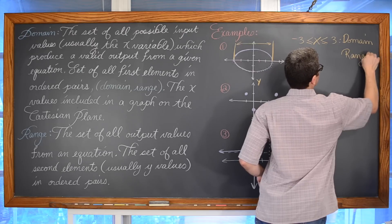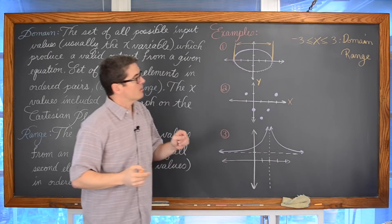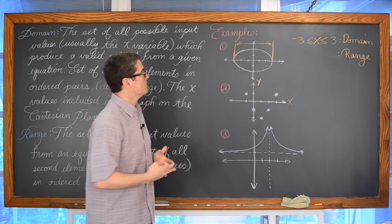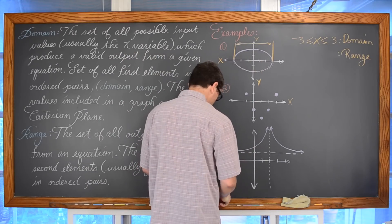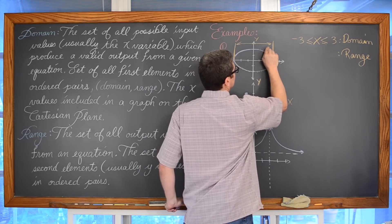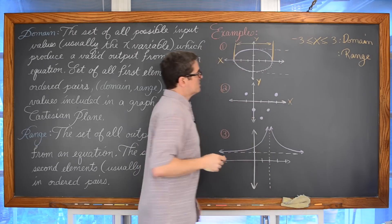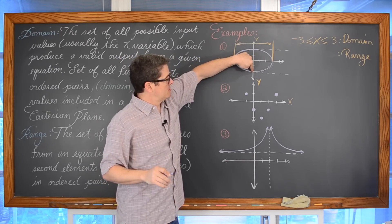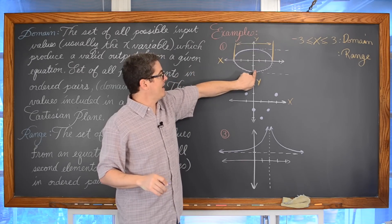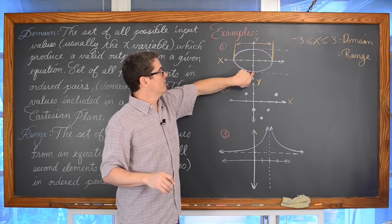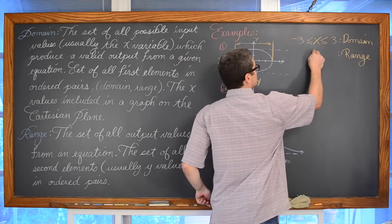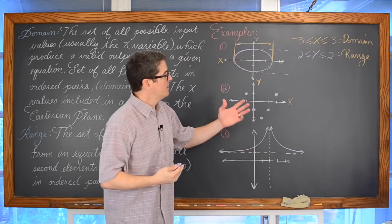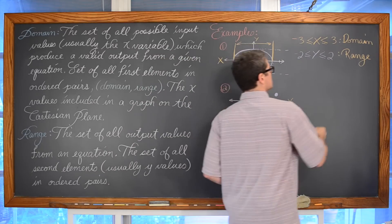The range would be all of the output values — graphically, we are looking at the y-axis. The range is all of the y values included in that graph. The graph is continuous, so it seems like it goes as far down as negative two and as far up as positive two, and every single y value is included between negative two and positive two. So the range is y is greater than or equal to negative two and less than or equal to positive two, written in inequality notation. In a precalculus book you might see this in interval notation.